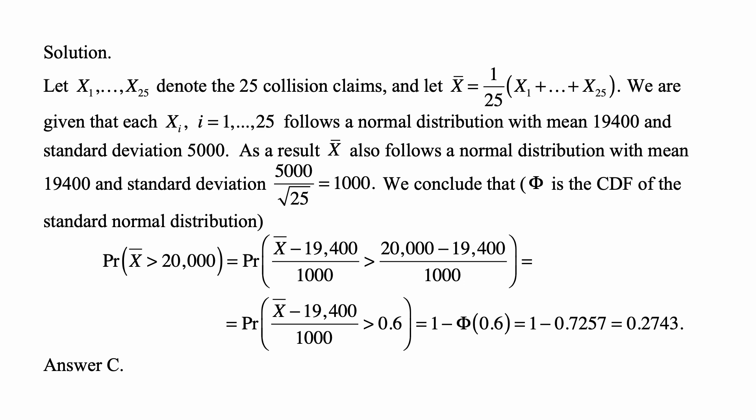Either way, you look it up. So this is 1 minus 0.7257, and that's equal to 0.2743, which is answer C.